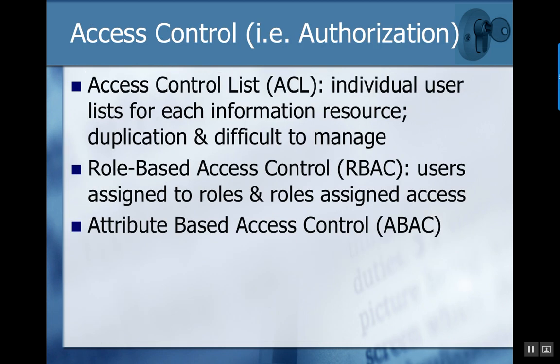Access control provides protection once you have authentication to get onto a system. Authorization establishes what you can get at while you're on the system. If somebody was able to guess the password, you establish a limit of what they can access. The big thing you'd always want to prevent is someone gaining administrator control, which basically gives the ability to access everything.